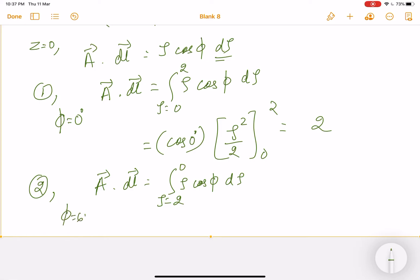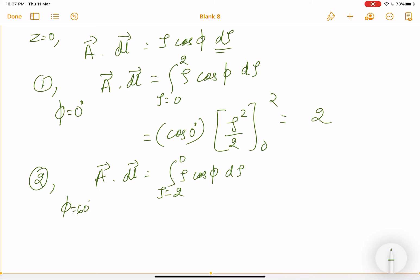here? 60 degrees. So what should I write? cos 60 degrees is constant, and ρ dρ will be ρ²/2 if you integrate it, from 2 to 0. cos 60 degrees is 1/2, and here I'll get -4/2, which is -2. So I got -1. Now all I need to do is add